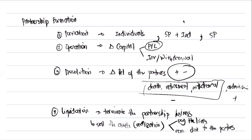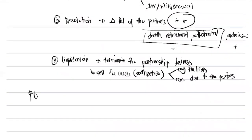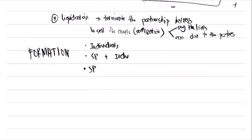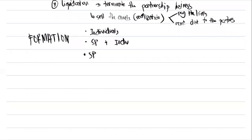So that covers the life cycle: formation, operation, dissolution, and liquidation. In this session, we focus on partnership formation — how to form a partnership if it is purely individuals, sole proprietorship plus individuals, or purely sole proprietorship.